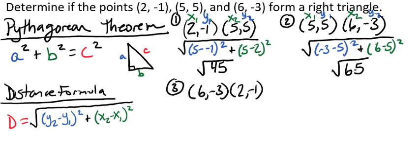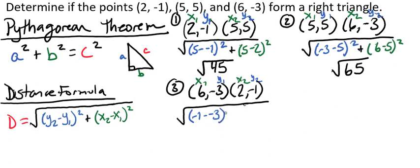Now let's find our third distance. Here we have x₁, x₂, y₁, and y₂, and we'll plug those in. That gives us √((−1 − (−3))² + (2 − 6)²). Plugging that into our calculator, we get the square root of 20.